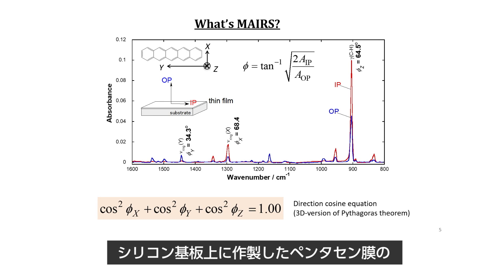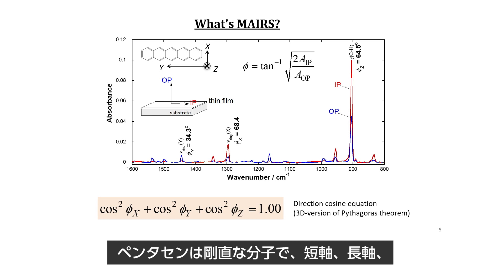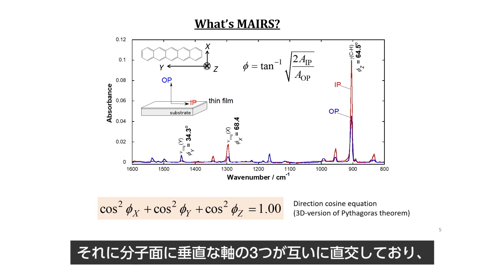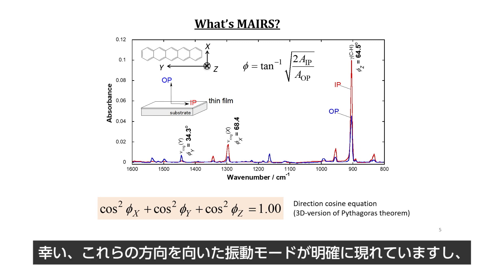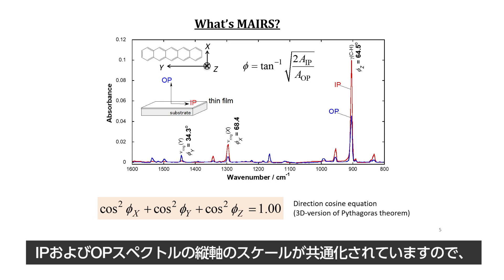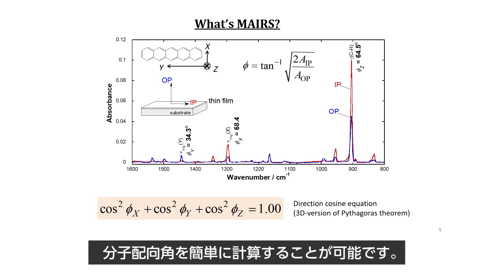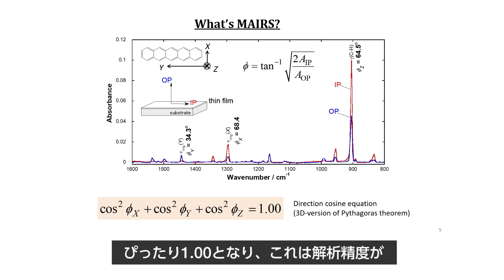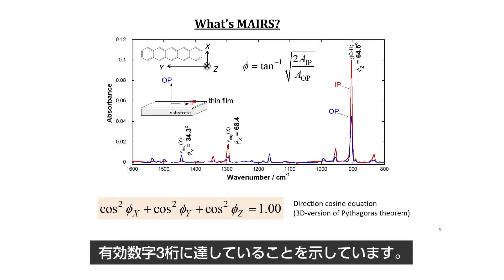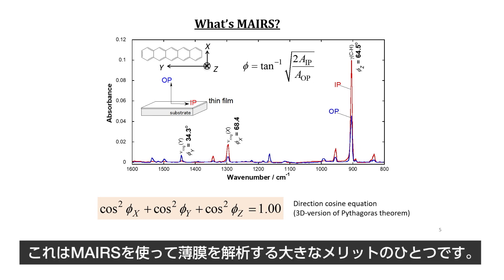I'm showing you a MERS spectrum of a pentacene film on silicon. Pentacene is a stiff molecule, and the short, long axis and the plane normal directions are named X, Y, and Z respectively, which are mutually orthogonal. Fortunately, vibrational modes along the three directions appear at different positions very apparently, and the orientation angles can be revealed by each intensity ratio because of the common ordinate scale of the IP and OP spectra. When the analytical results are put in the direction cosine equation, we have the summation of 1.00 as theoretically expected, which means that the analytical accuracy attains three significant figures. This is the typical benefit of using MERS for thin film analysis.